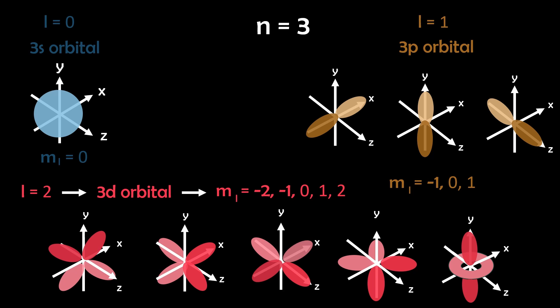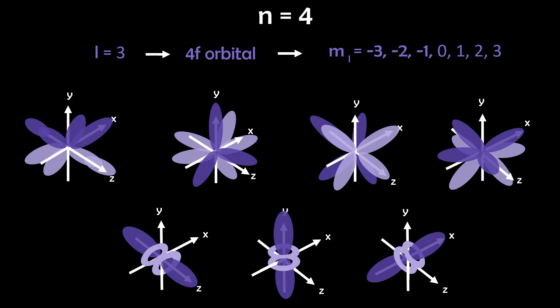For n equals four, the orbitals look even weirder. Electrons can occupy the 4s, 4p with three configurations, 4d with five configurations, and finally 4f orbitals which have seven configurations.